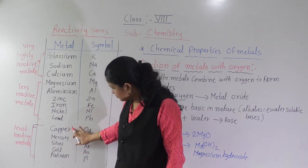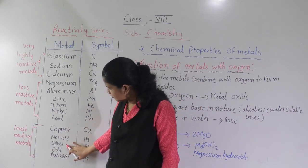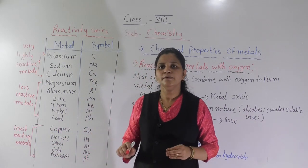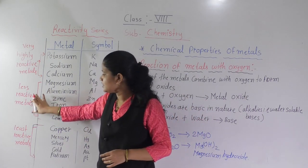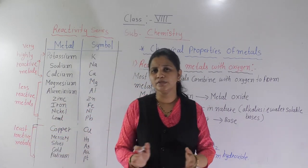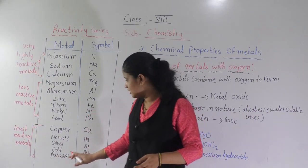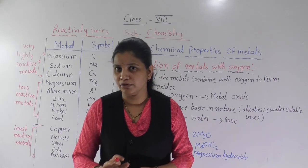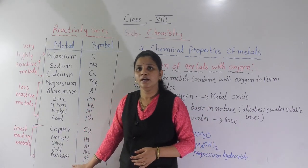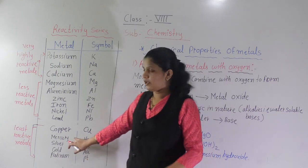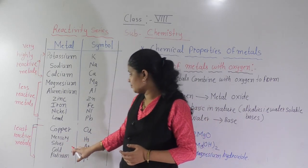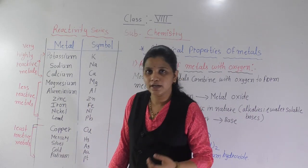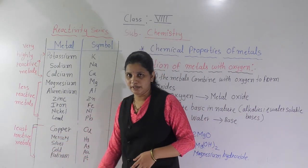And finally, copper, mercury, silver, gold, and platinum — these are least reactive. The last ones — gold, platinum, and silver — you can say they are practically non-reactive, because they are not taking part in reactions. That is why we wear jewellery made of silver, gold, and platinum — because they are least reactive metals.